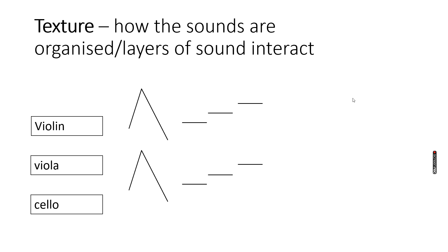Let's say the viola plays exactly the same as the violin but lower. That would be given a name in texture because those two sounds are interacting in a special way. Let's say the cello is now doing something completely different — it's going high and low in pitch, it's going crazy. So how those layers of sounds are interacting and how we've organised those sounds would be given a name, which we're going to learn about in today's session.